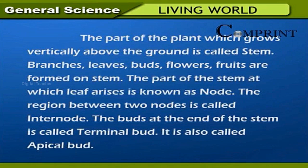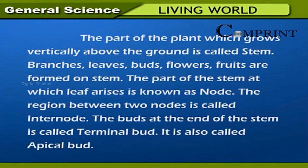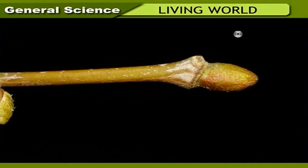The part of the plant which grows vertically above the ground is called the stem. Branches, leaves, buds, flowers, and fruits are formed on the stem. The part of the stem at which a leaf arises is known as a node. The region between two nodes is called an internode. The bud at the end of the stem is called the terminal bud, also called the apical bud. The angle between the leaf and stem is called the axil.